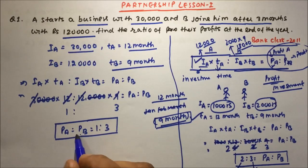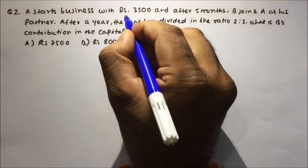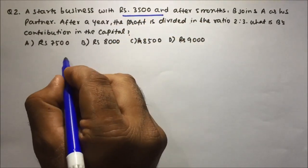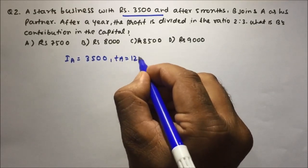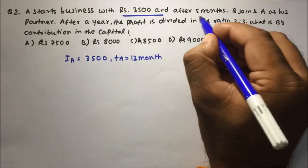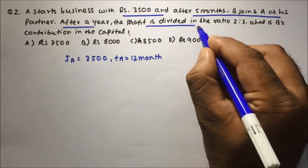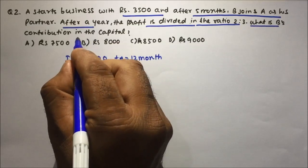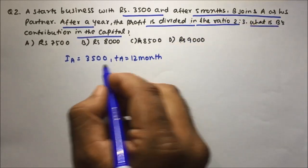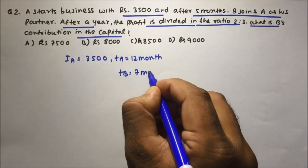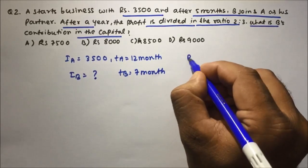Question 2: A starts a business with 3500 rupees, investing from the beginning for 12 months. After five months, B joins as his partner. After a year the profit is divided in the ratio 2 : 3. We need to find B's contribution to the capital. B joins after five months, so B invests for 7 months. B's investment is not given; the profit ratio is given as 2 : 3.